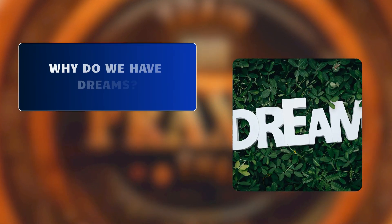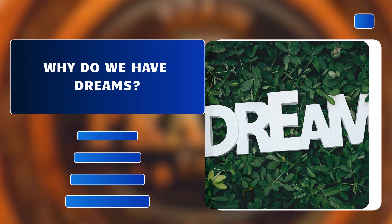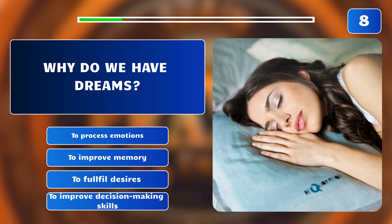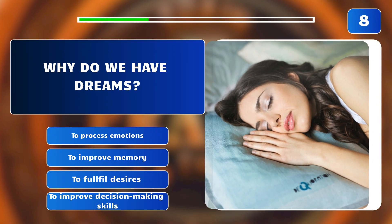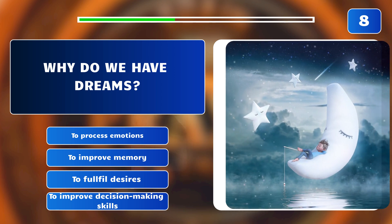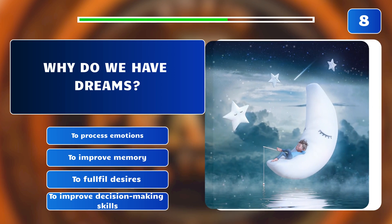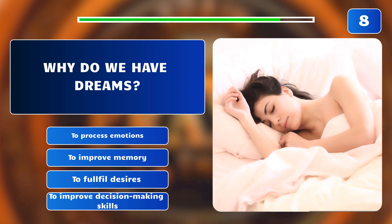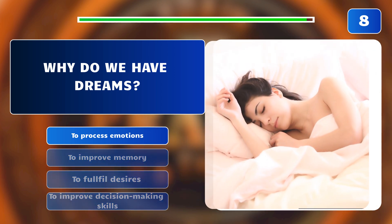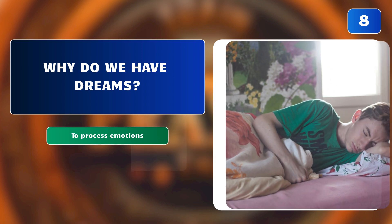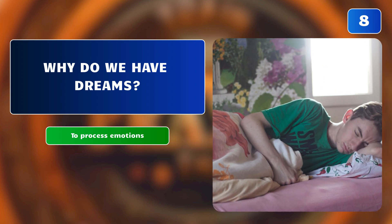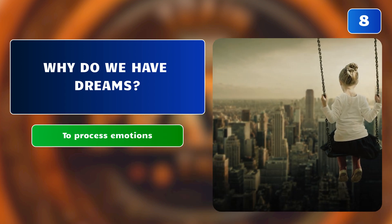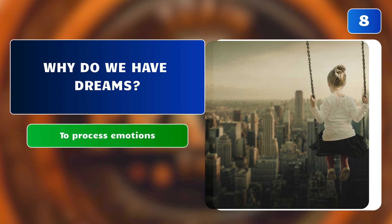Why do we have dreams? To process emotions? To improve memory? To fulfill desires? Or to improve decision-making skills? The correct answer is: to process emotions. Dreams are a result of the brain's processing of emotions, memories, and experiences during sleep.